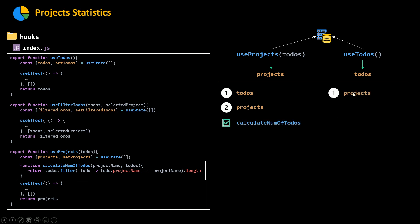But on the other hand, if we get the projects first and haven't yet received the to-dos — because this is asynchronous code — then when we run our function, the to-dos array is empty and it's going to return zero or undefined for the number of to-dos for all projects. And when we later get our to-dos from the database, we don't rerun the useProjects hook, so we never recalculate the number of to-dos and see no updates in our app.